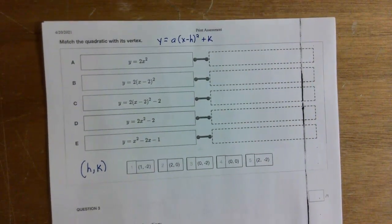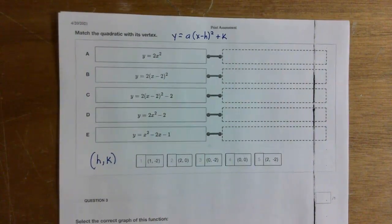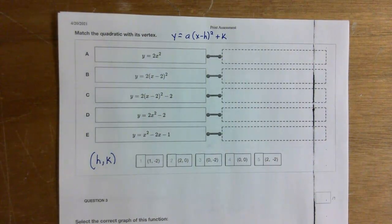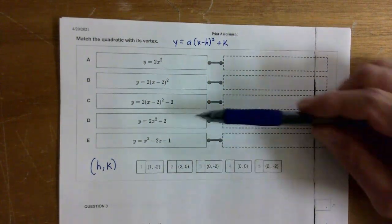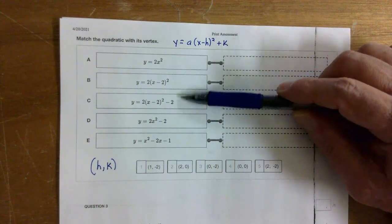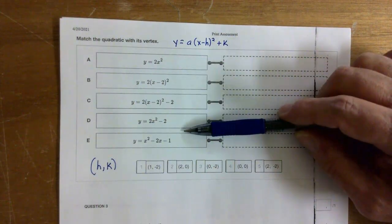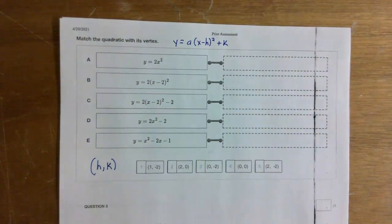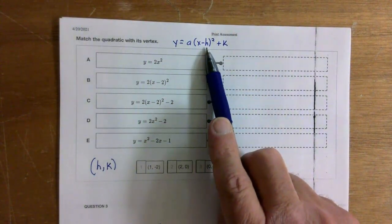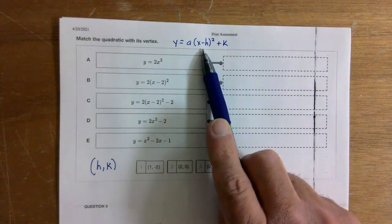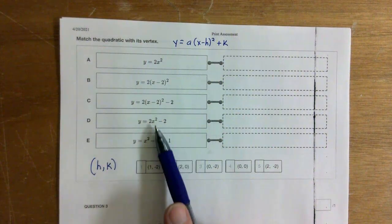Number two: you have to match the quadratic with the vertex. All of the top four (a, b, c, d) are in vertex form. Remember, sometimes h is zero, so it just says x squared — when it looks like that, h is zero.